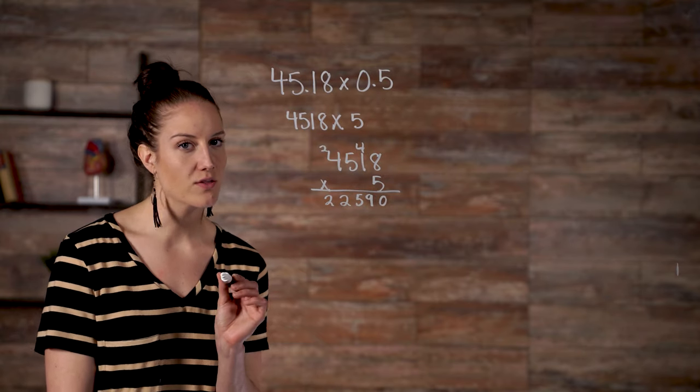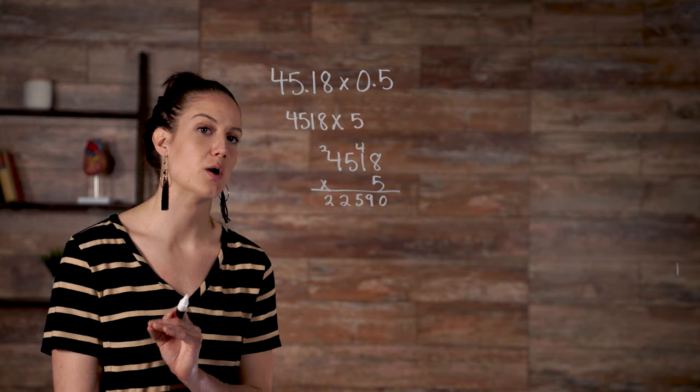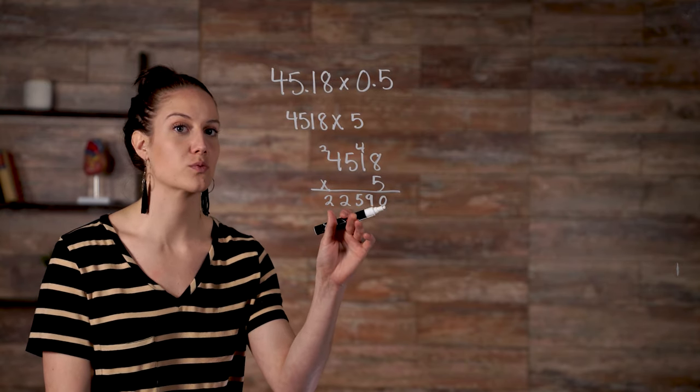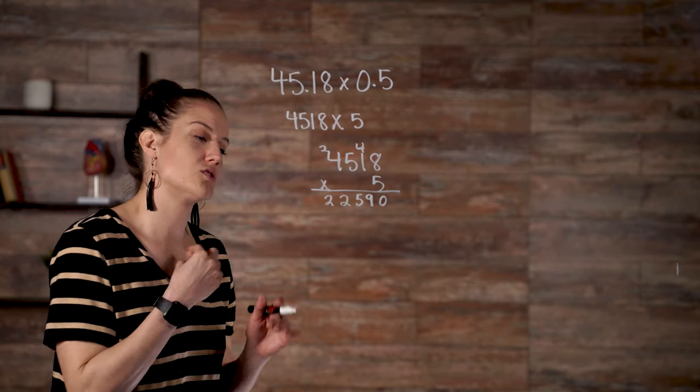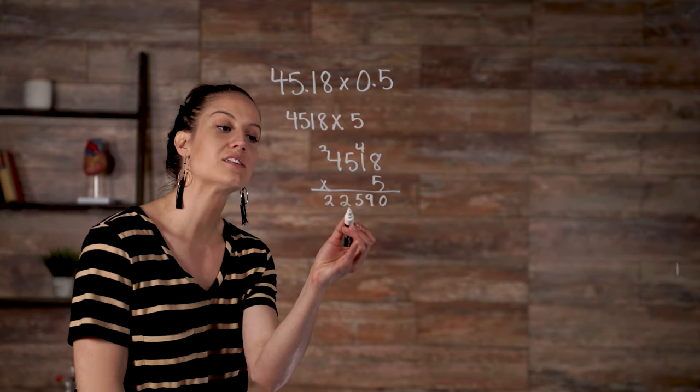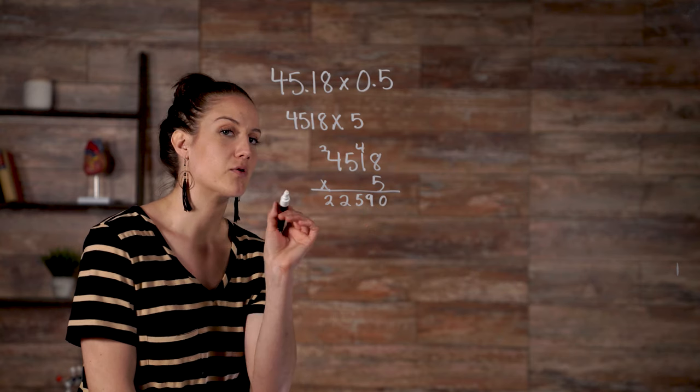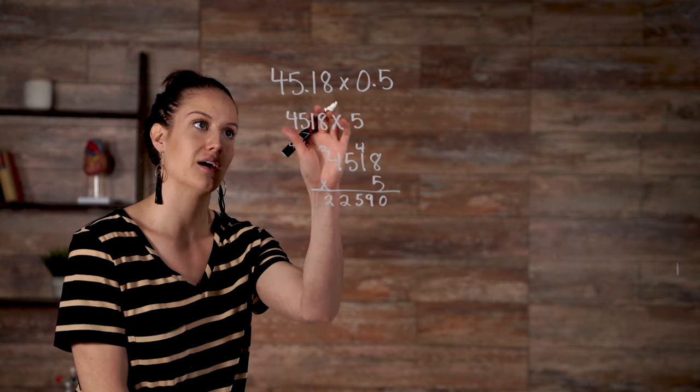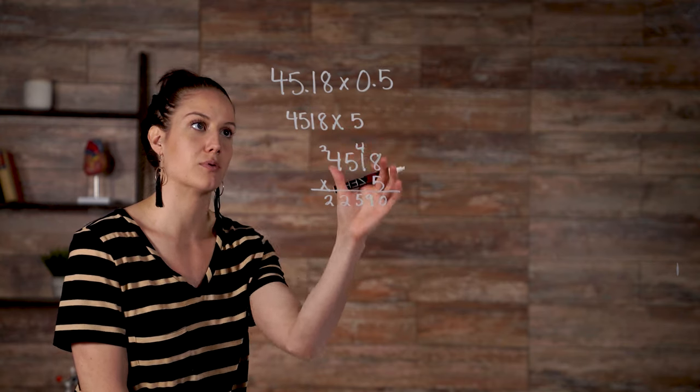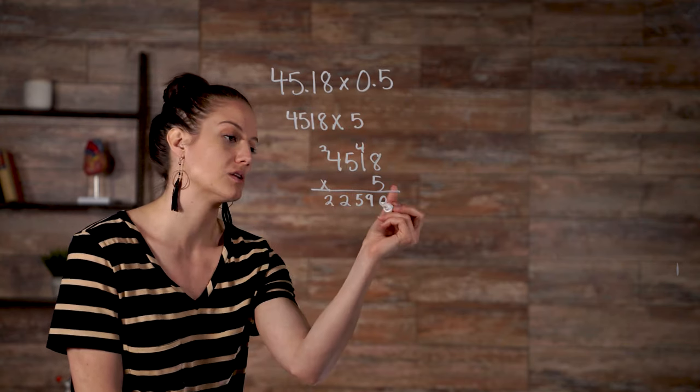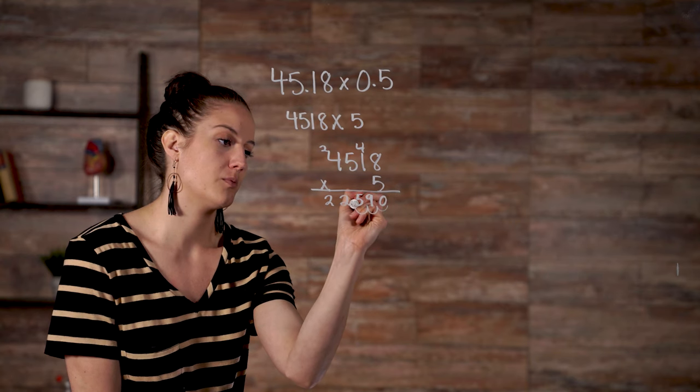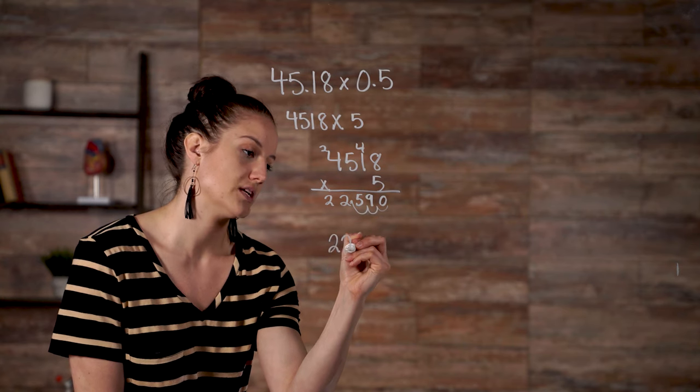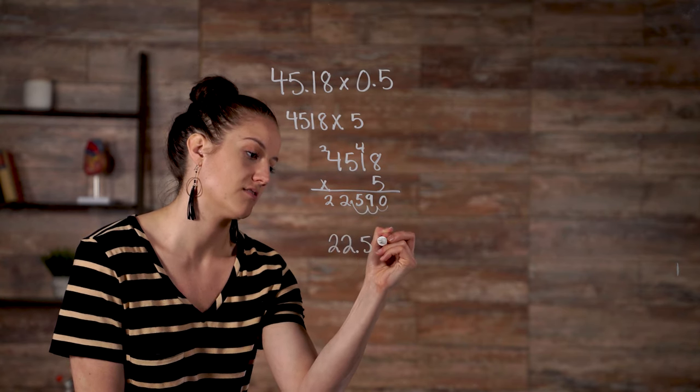We're almost done. Now that we know there are three numbers behind the decimals, we go back to our answer and place the decimals three places from the last number. So the first number we got was 22,590. But remember, we have to move our decimal point three places to the left because we had three numbers behind our decimal point here. So when we do that, our decimal point ends up right after our 22. So our final answer is 22.59.